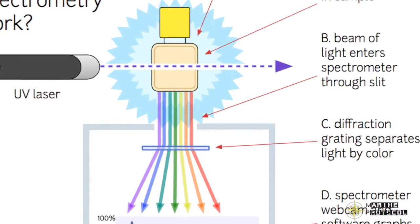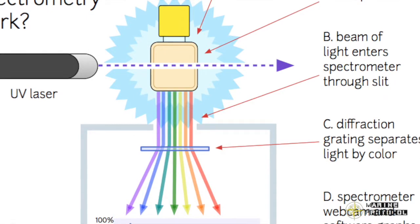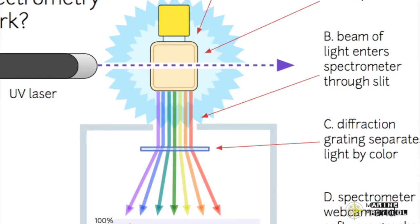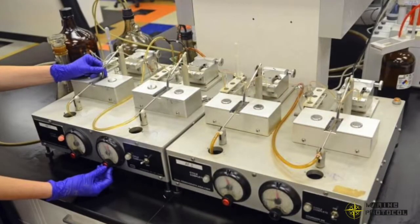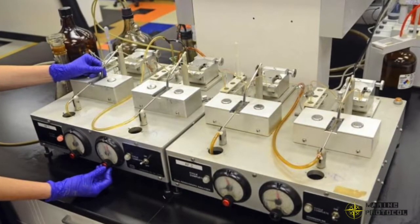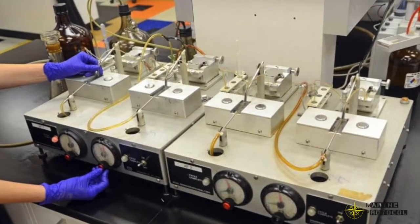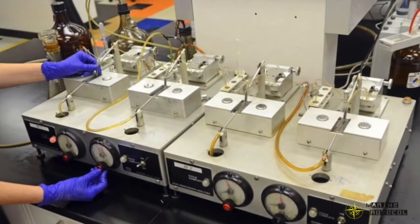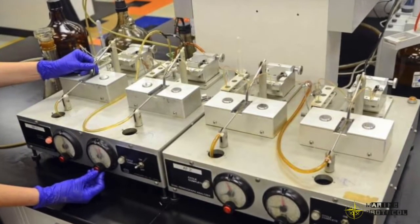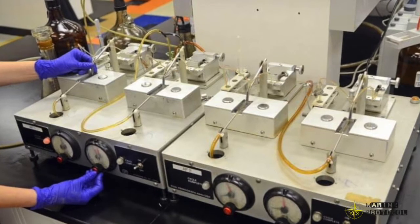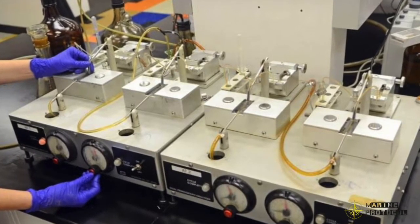In the ferrographic test, the sample is first thinned with solvents and allowed to pass slowly down a slide surrounded by a powerful magnetic field. It is then examined by a special microscope with red and green filters under lights. The shape of the particles is used to identify the source of the wear debris.